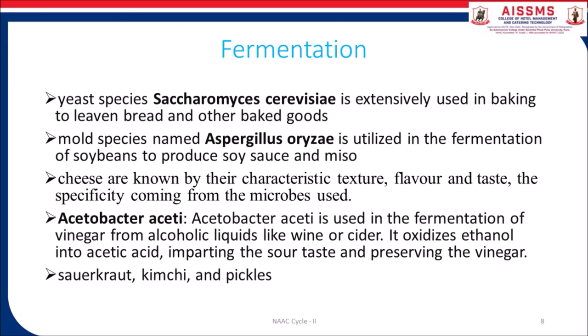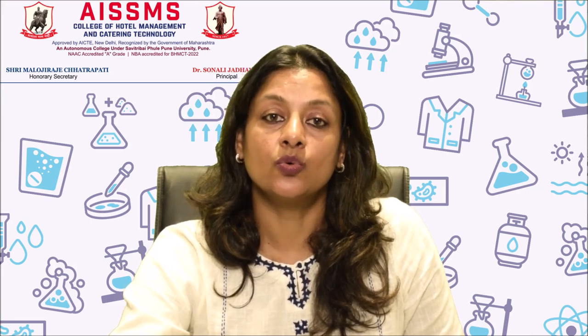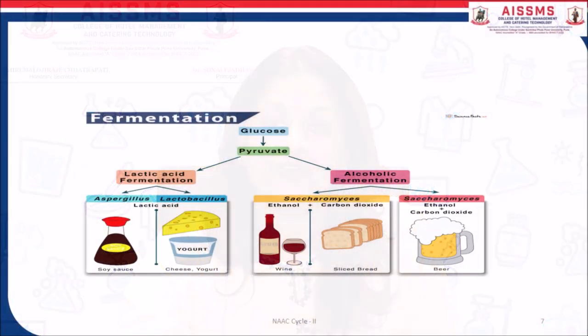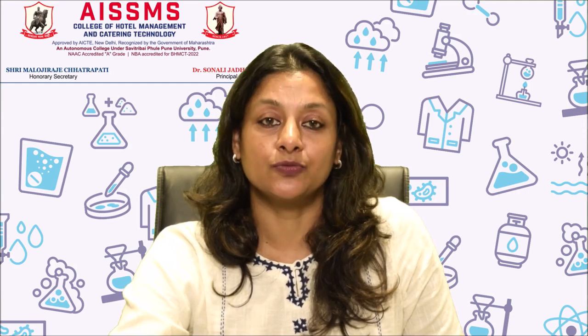The yeast species Saccharomyces cerevisiae is extensively used in baking to leaven bread and other baked goods. It ferments the sugar present in the dough in the form of starch, producing carbon dioxide gas that causes the dough to rise, resulting in soft and fluffy bread. A number of traditional drinks and foods are also made by fermentation. A traditional drink named toddy from parts of southern India is made by fermenting sap from palm trees.